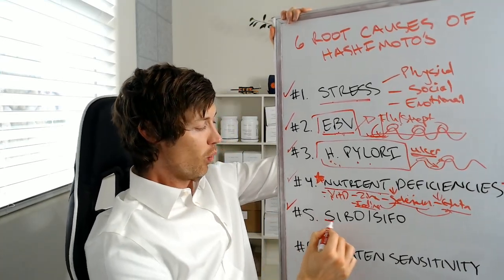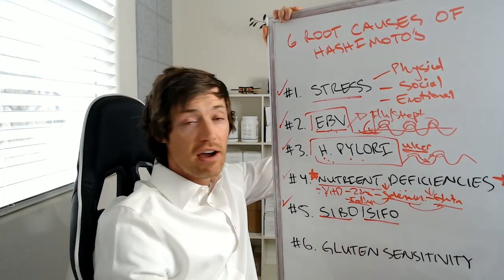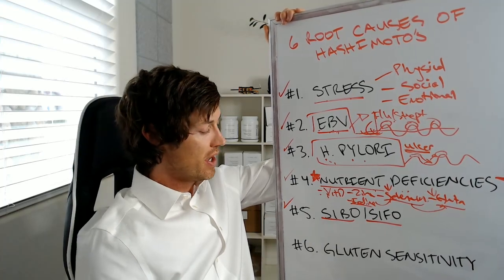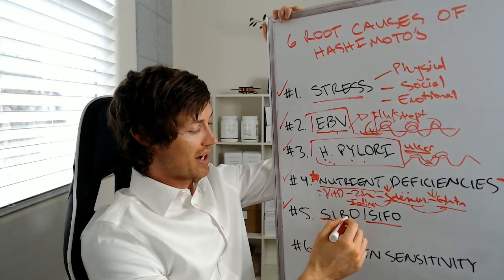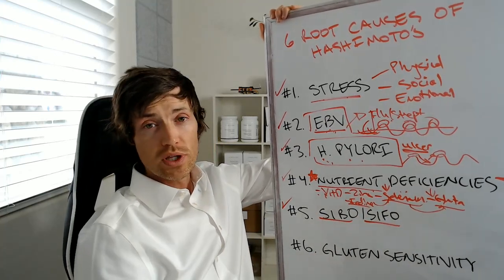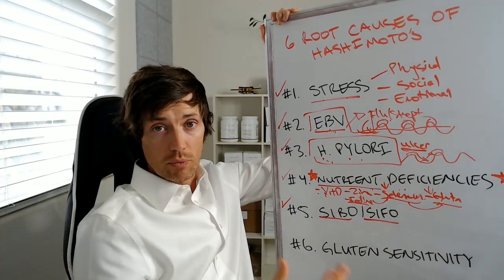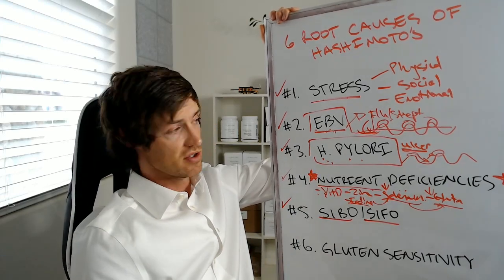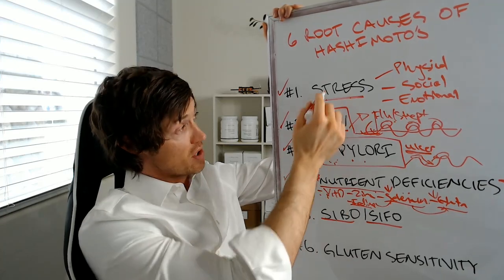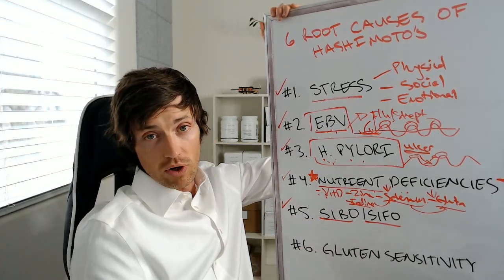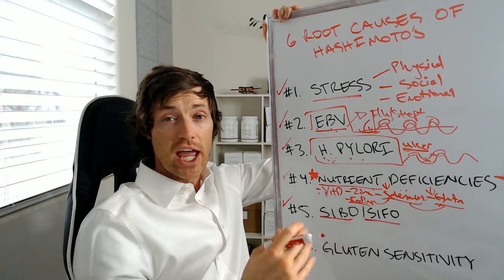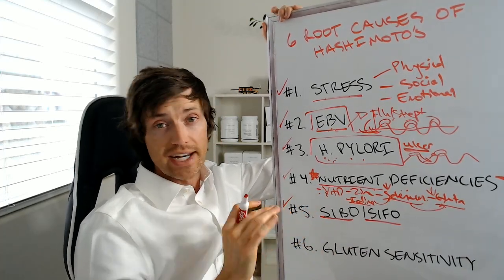Next on the list would be what I'm referring to as SIBO or SIFO. Now you may or may not have heard about these conditions. They're very, very common by the way. SIBO stands for small intestinal bacterial overgrowth and SIFO stands for small intestinal fungal overgrowth. So really what we're talking about here is your gut, right? We're really talking about the importance of the gut and that should come as no surprise to you. H pylori played a role with the gut. Stress can play a role with the gut as well. And now SIBO and SIFO play a role in the gut as well. So what happens in these conditions is that you have a normal amount of bacteria in your gut at any given time.